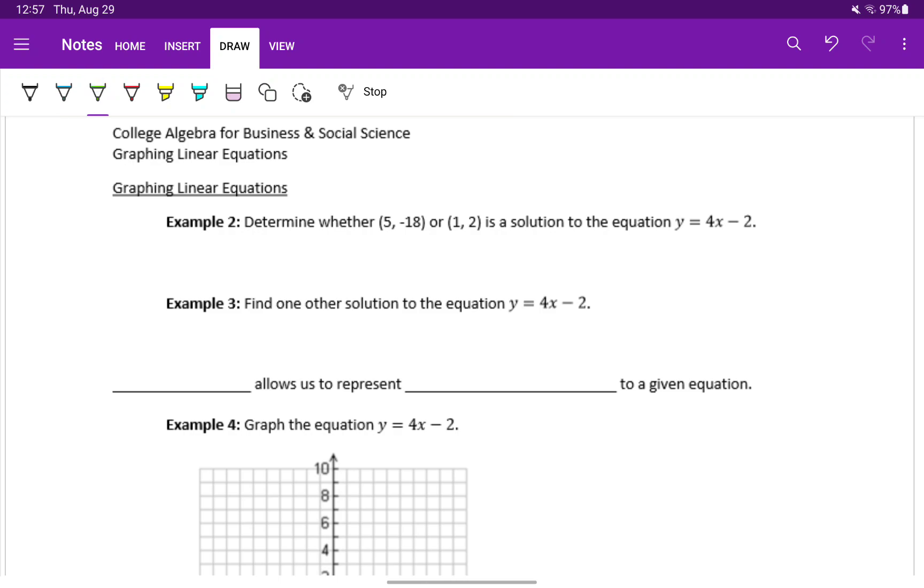To do this, we'll start with the first pair, 5 comma negative 18, and plug those values into our given equation in the appropriate place. So for y, we'll substitute in negative 18, and then for x, we'll substitute in positive 5.